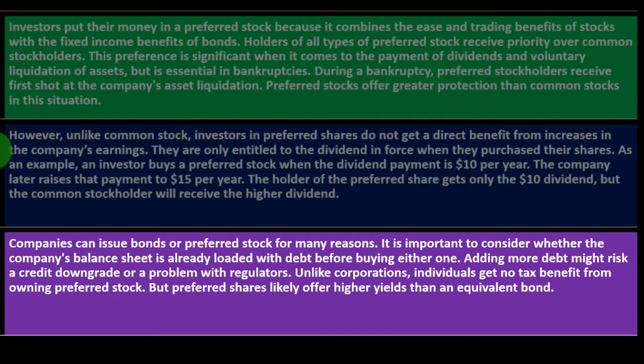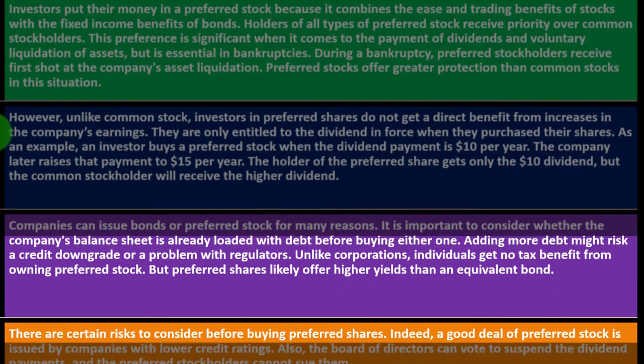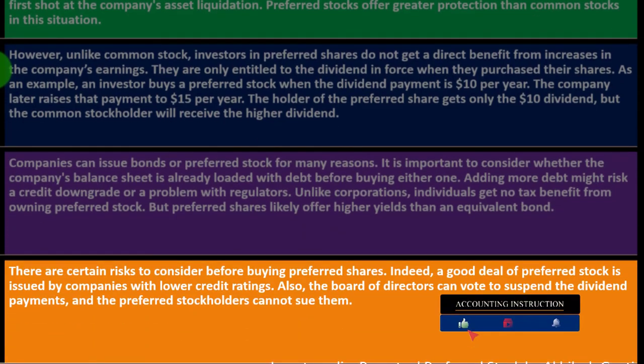Companies can issue bonds or preferred stock for many reasons. It is important to consider whether the company's balance sheet is already loaded with debt before buying either one, as adding more debt might risk a credit downgrade or a problem with regulators. Unlike corporations, individuals get no tax benefit from owning preferred stock, but preferred shares likely offer higher yields than an equivalent bond. There are certain risks: a good deal of preferred stock is issued by companies with lower credit ratings, and the board of directors can vote to suspend dividend payments and preferred shareholders cannot sue them.